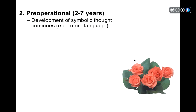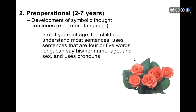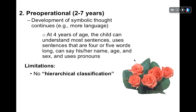The pre-operational stage is the second stage, spanning two to seven years. Symbolic thought continues and there's more language development. By around age four, kids are able to understand most sentences, use sentences four or five words long, say their name, age, and sex, and use pronouns. Not only are they developing language, but they're also developing a sense of who they are — this sense of 'me' or 'I' — by using pronouns. Piaget often focused on limitations — things kids aren't able to do at various stages. One is solving hierarchical classification problems. For example: if you have five roses and three carnations, do you have more flowers or more carnations? Adults can see that flowers is a higher-order category containing both roses and carnations, but kids this age have difficulty with that kind of higher-order classification.